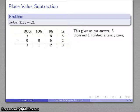And I can now read off my answer. Here, 3,100, 2 tens, 3 ones. Or more conventionally, 3,123.